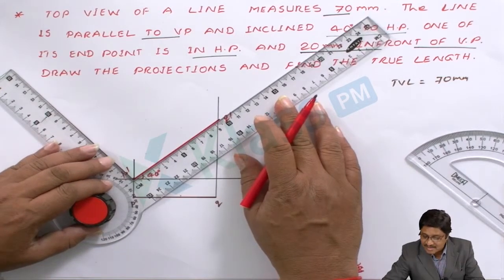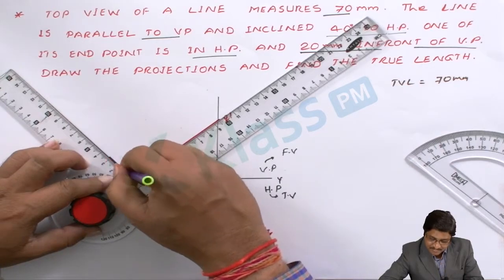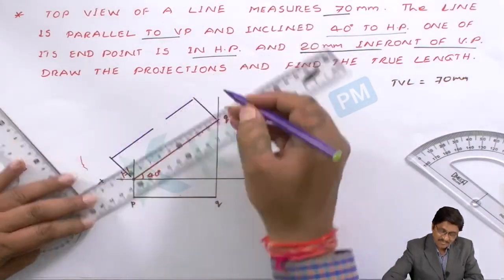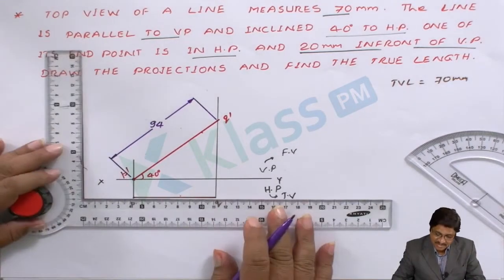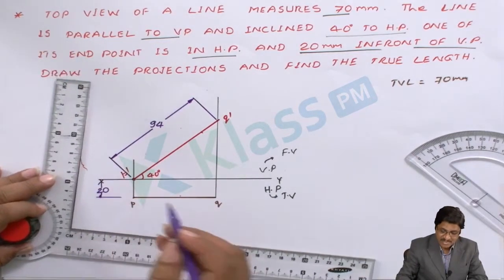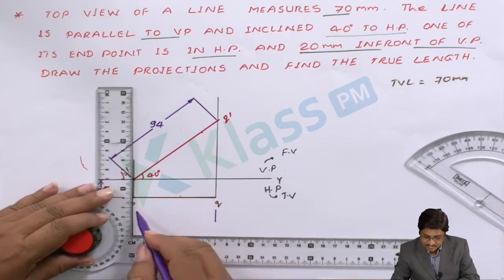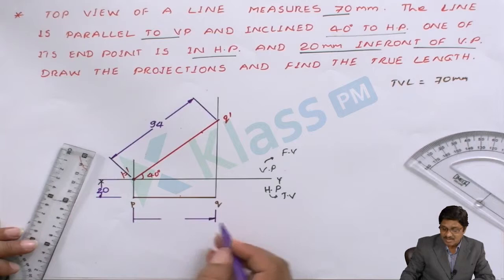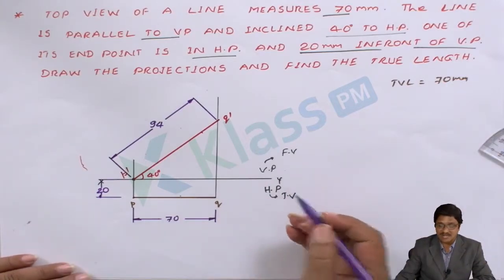So what value are you getting? Approximately 94 mm. Show that by a dimension line with extension lines. The true length you are getting is 94 mm — that is the answer. Also show the other given dimensions: 20 mm distance from VP, and the top view length of 70 mm. Everything that was given in the problem must be shown with dimensions. The 70 mm given top view and 94 mm true length are both now represented.